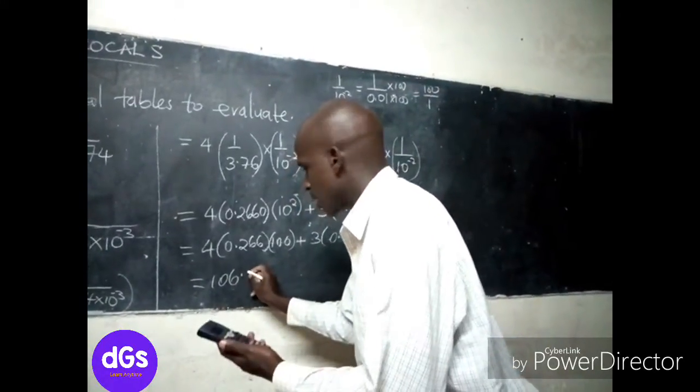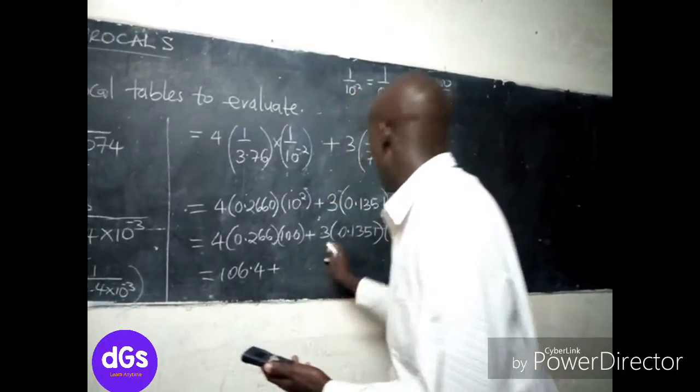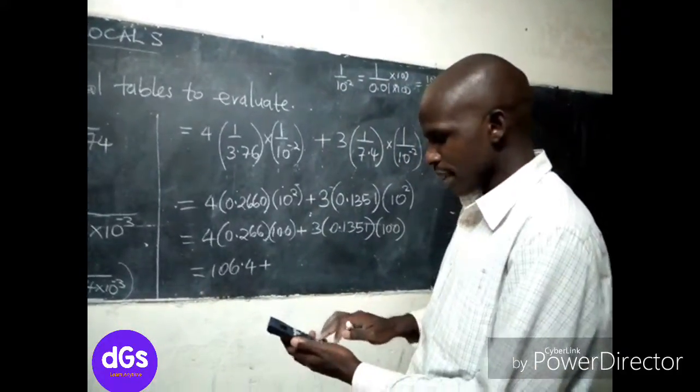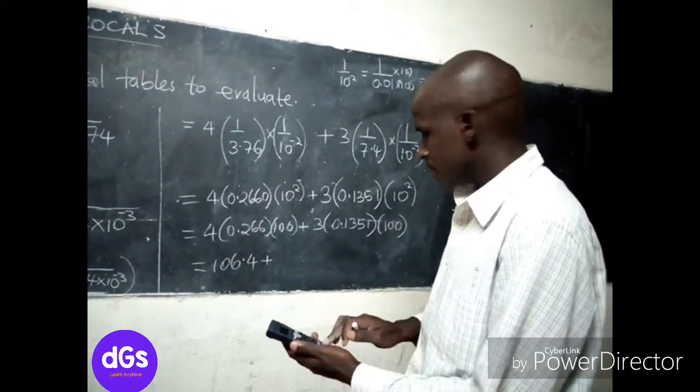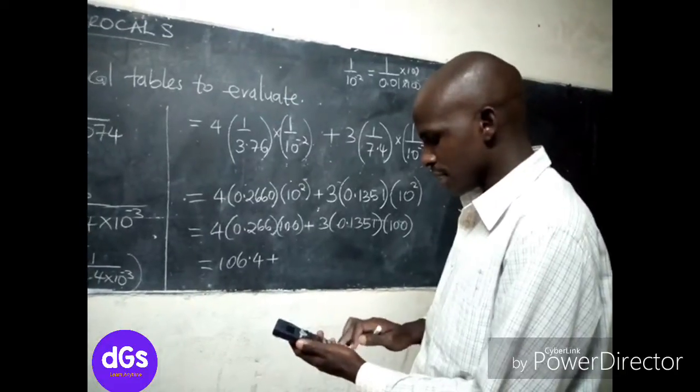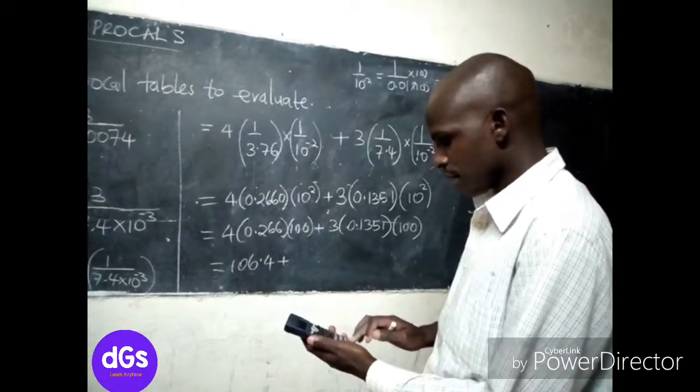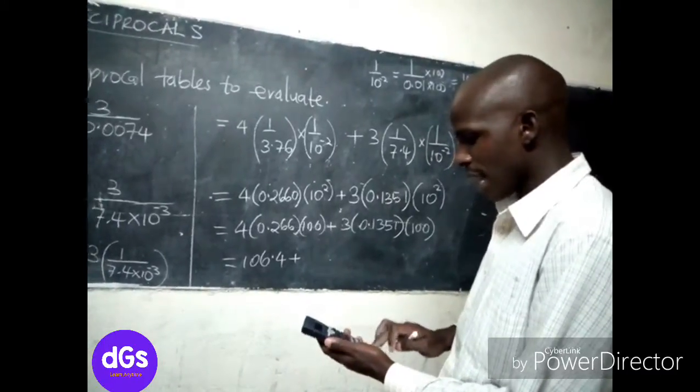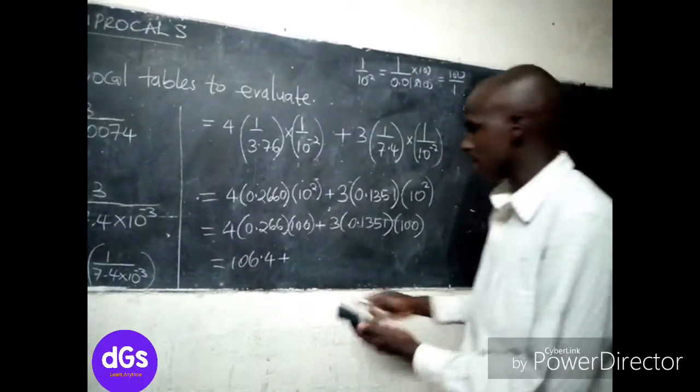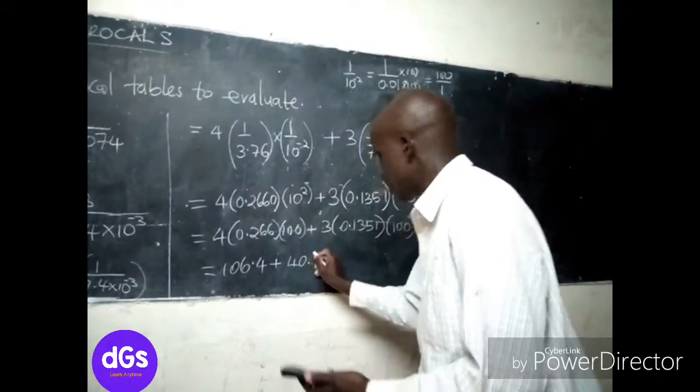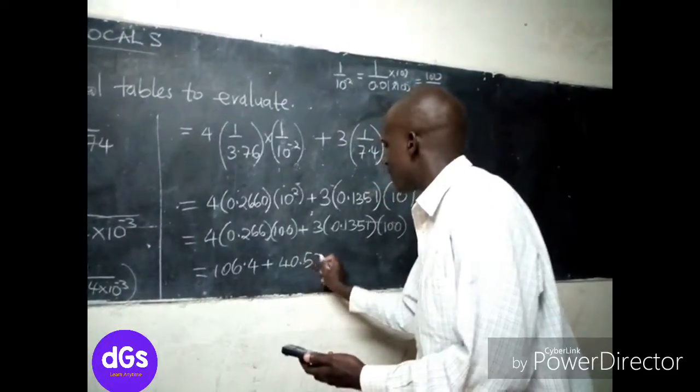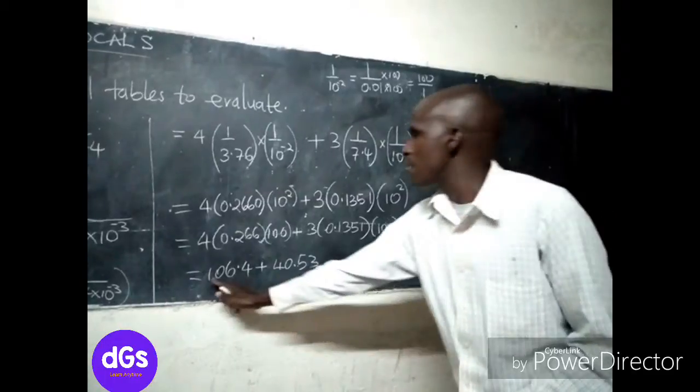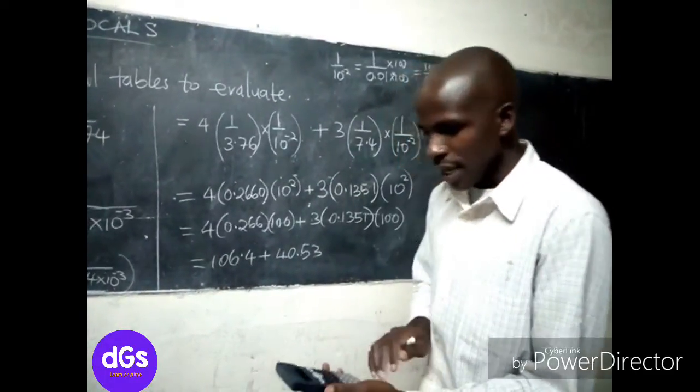And we are adding this, which is 3 times 0.1351 times 100. This one gives us 40.53.